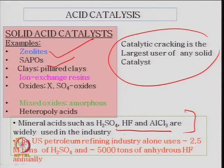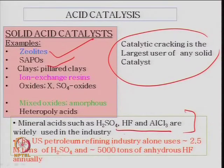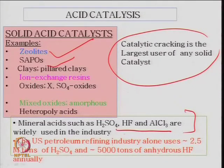The US petroleum refinery industry alone uses 2.5 million tons of sulfuric acid and 5000 tons of anhydrate hydrofluoric acid for the catalytic industry. This is a huge business — if one can replace this acid catalyst by some zeolite type material, it is a new trend. By adjusting silica-to-alumina ratio or by taking ZSM-5 catalyst, one can do alkylation reactions by zeolite catalyst, which is nowadays being practiced.